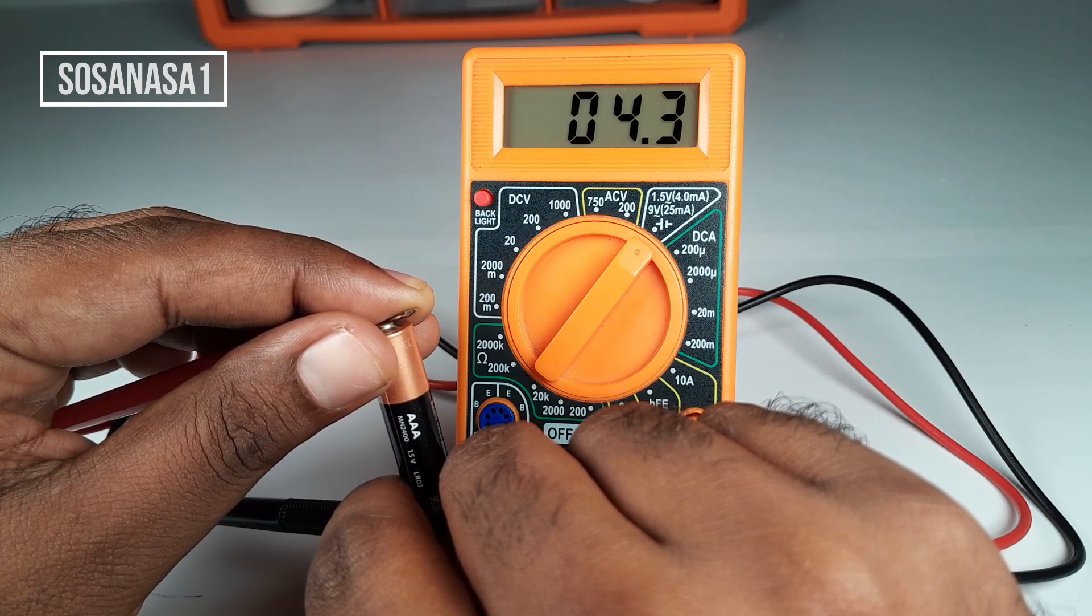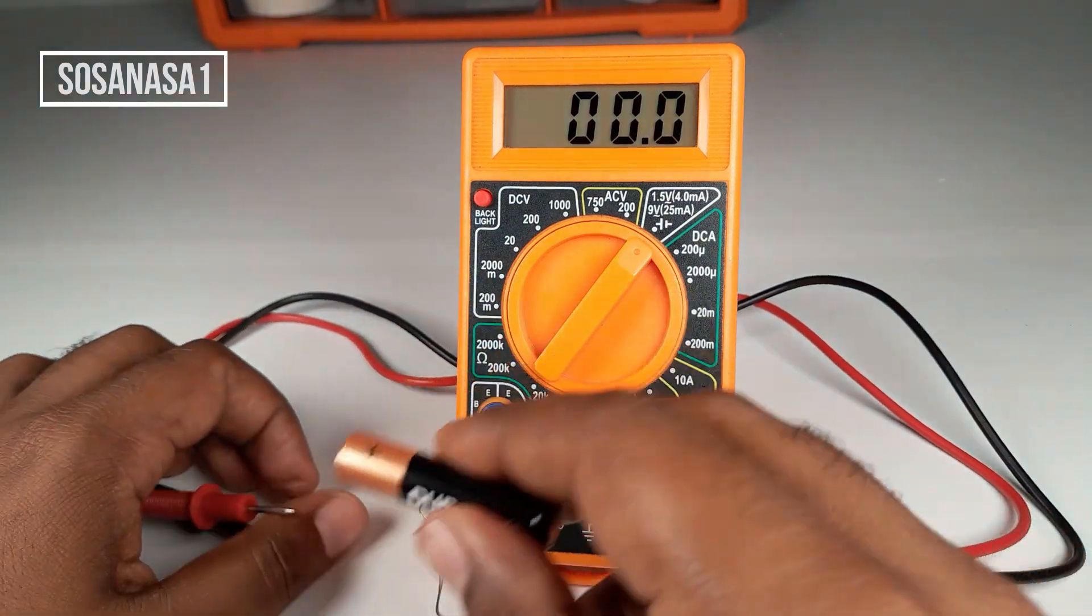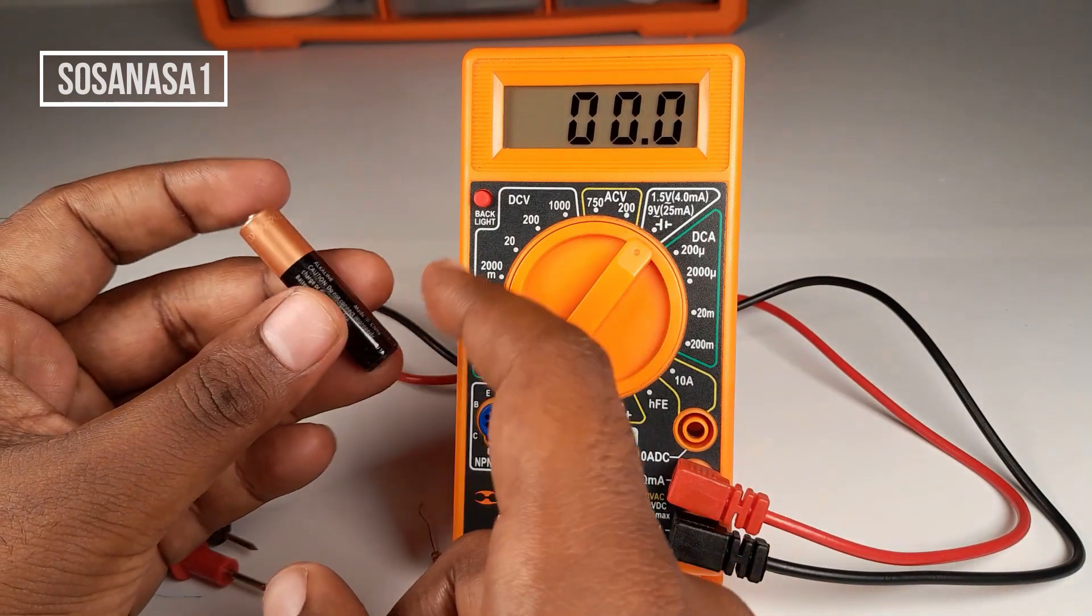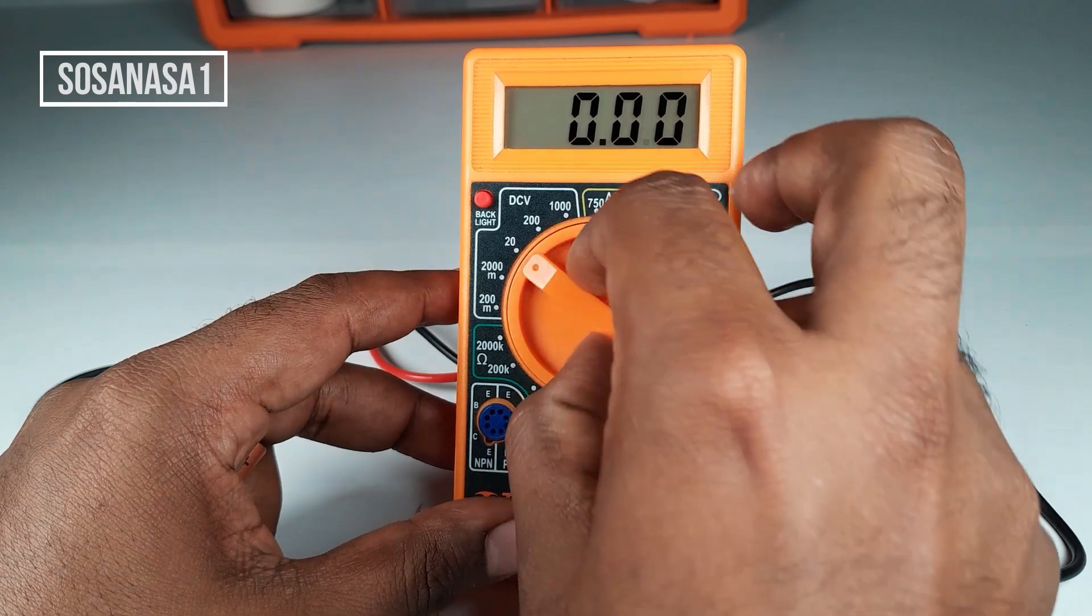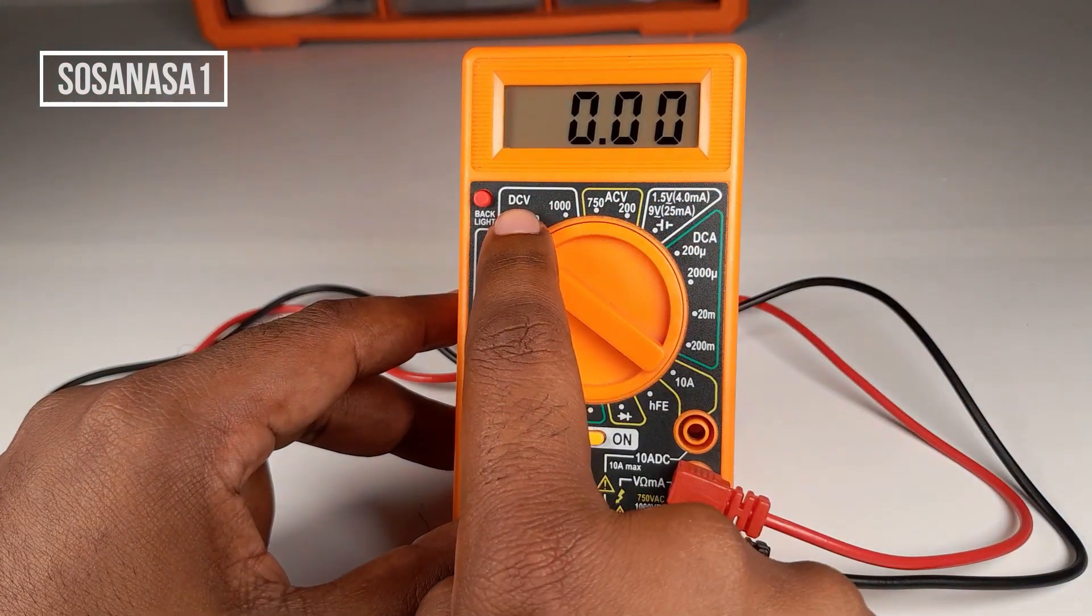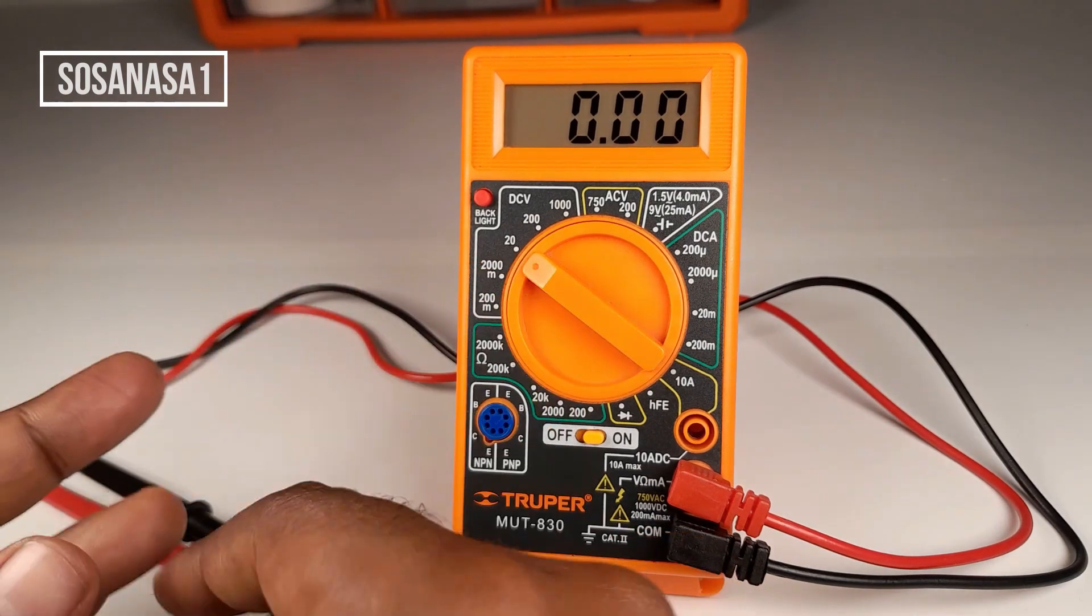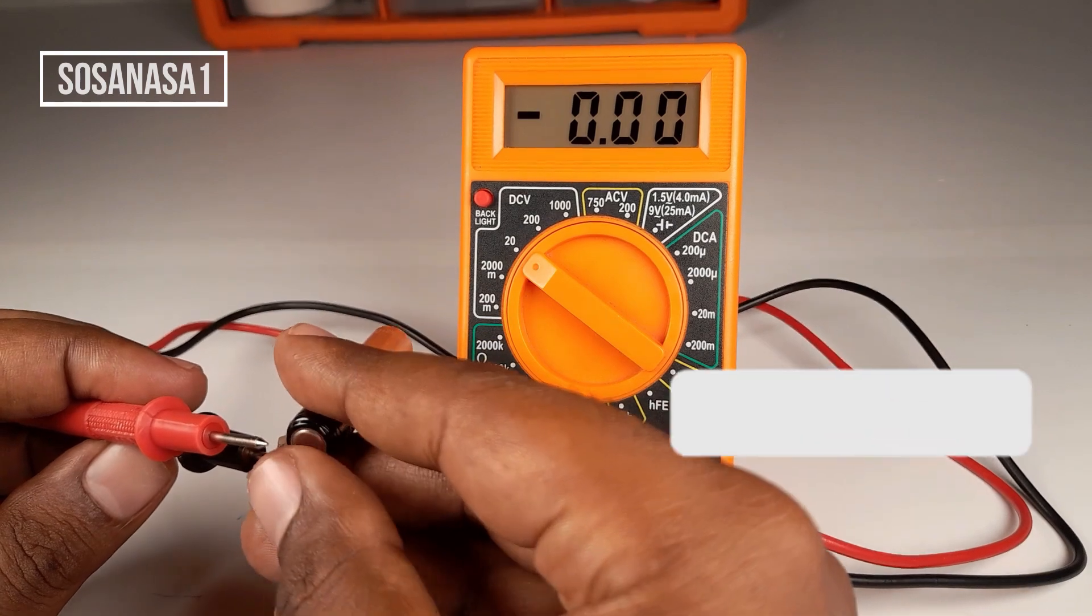It means this battery is full. Now I'm going to show you another way to test this battery. Move the selector and put it in the direct current voltage area, here at 20 volts, and connect again the negative probe.